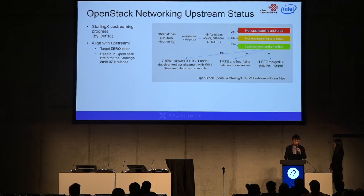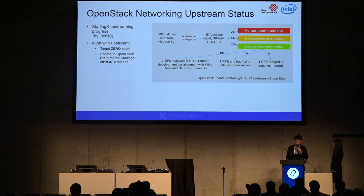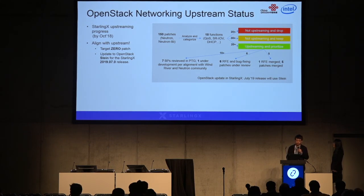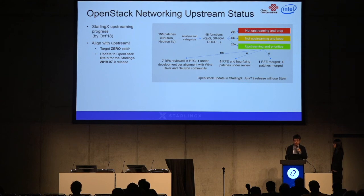The eventual target of StarlingX upstream is to align with upstream — meaning there will be zero patches in the staging repos of all staging repos including stx-neutron, stx-nova, etc. StarlingX will update to OpenStack Stein for the StarlingX July 2019 release. The progress of the StarlingX networking project: we have around 150 patches in Neutron and Neutron-lib divided into 18 functions including QoS, DHCP, and so on. Currently we have seven blueprints reviewed in the PTG session and are 100% in development to preserve alignment with the OpenStack community. We have some other enhancements and bug fixes already merged or being reviewed.